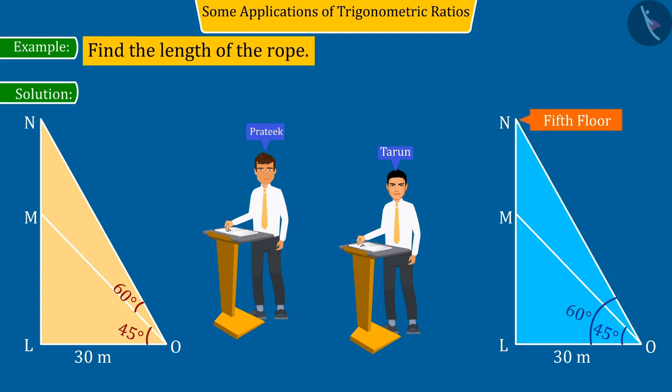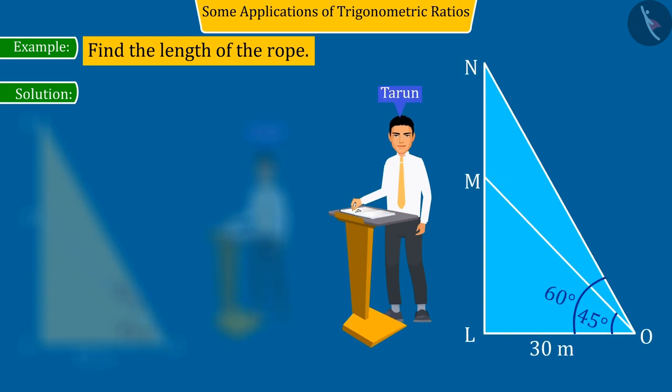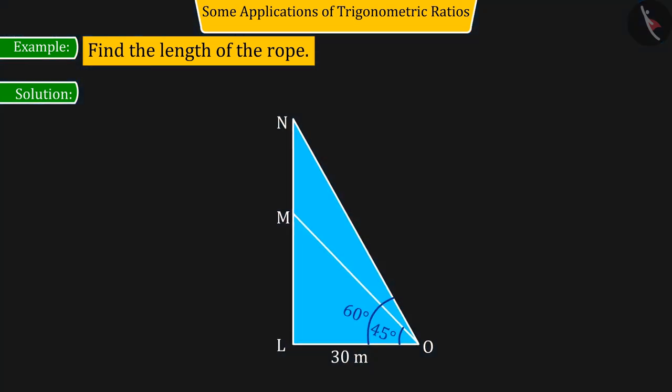So, we can say that the figure created by Tarun is the correct figure. Let's discuss about this figure where he has to find the length of O, M and O, N.